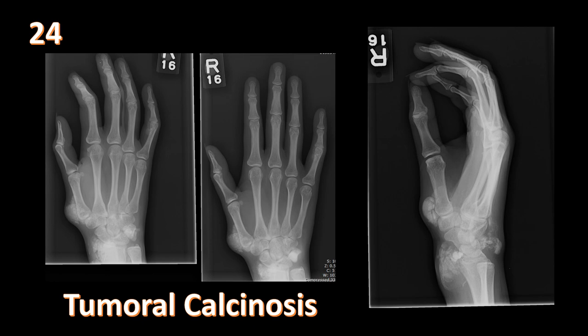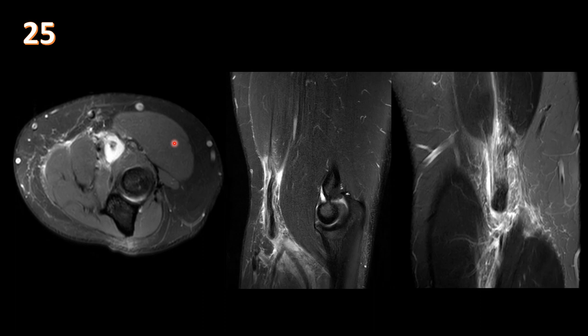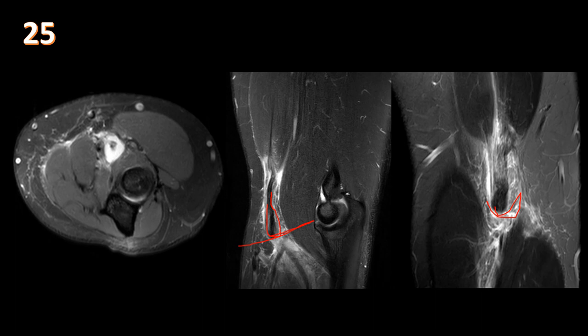Axial, sagittal, and coronal T2 fat-suppressed MRI images of the elbow show fluid around the distal biceps tendon, which is retracted and not inserting at the radial tuberosity — it is stuck at the level of the lacertus fibrosus, the typical site of retraction after tear. On radiograph, the Popeye sign is seen as the retracted biceps muscle appears very prominent. When performing elbow MRI for a biceps tendon tear, include the proximal arm to assess the amount of retraction from the radial tuberosity.